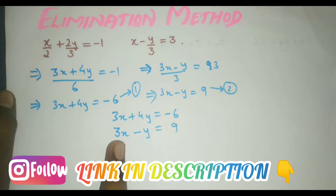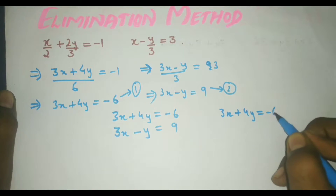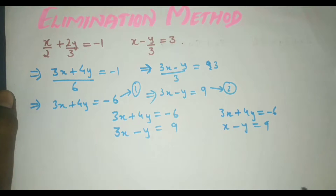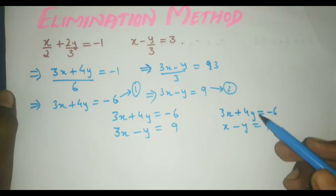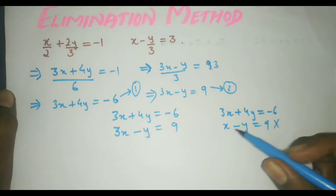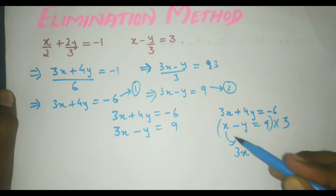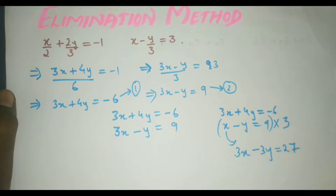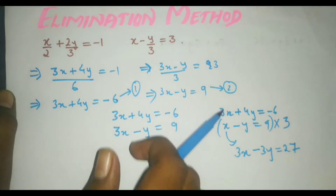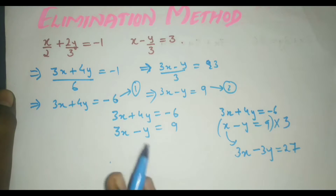You can eliminate either the x term or the y term. If the terms are not the same, you have to make them equal. For example, if the second equation had x instead of 3x, you would multiply the whole second equation by 3, giving 3x minus 3y equal to 27. Now the x coefficients are the same, so you can apply the elimination method.